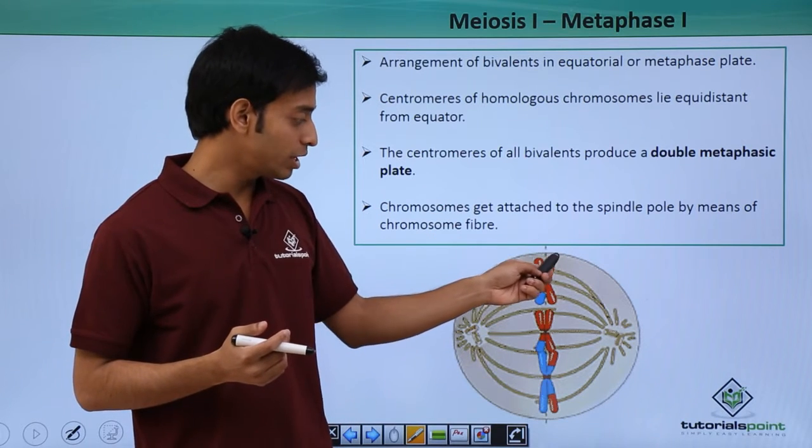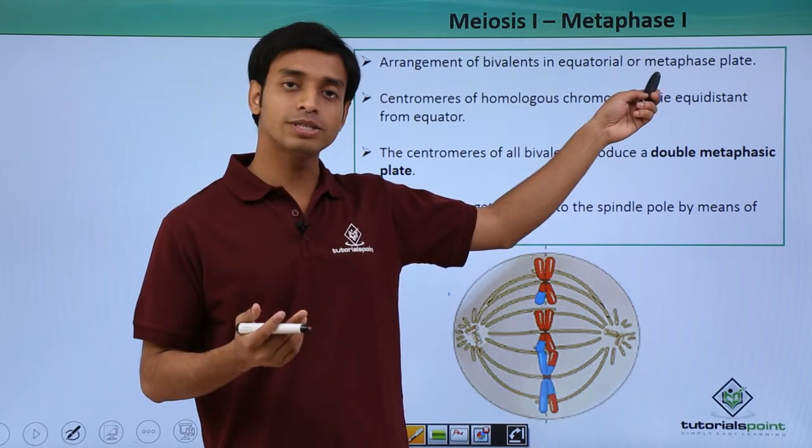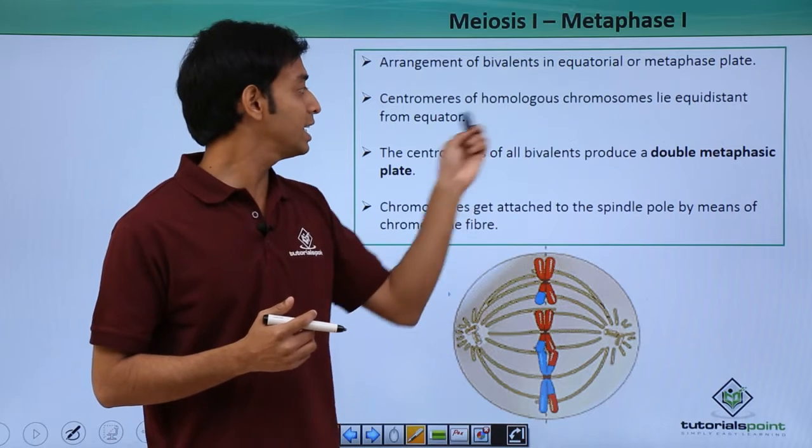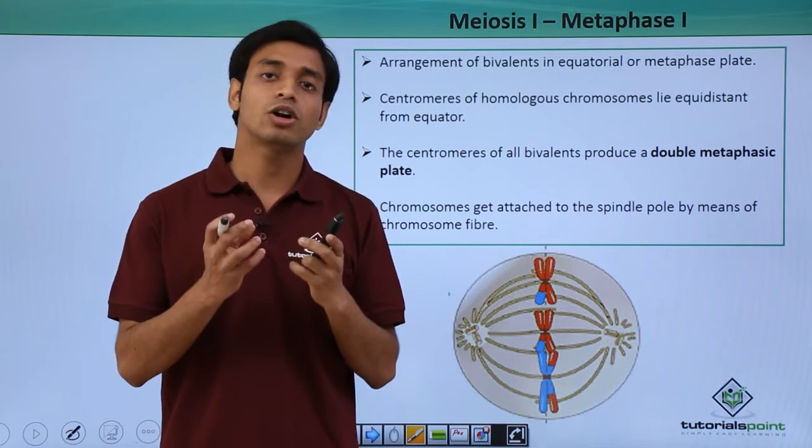There will be two pairs of homologous chromosomes forming the metaphase plate. The centromeres of the homologous chromosomes lie equidistant from each other. The asters or astral rays were formed initially during prophase.